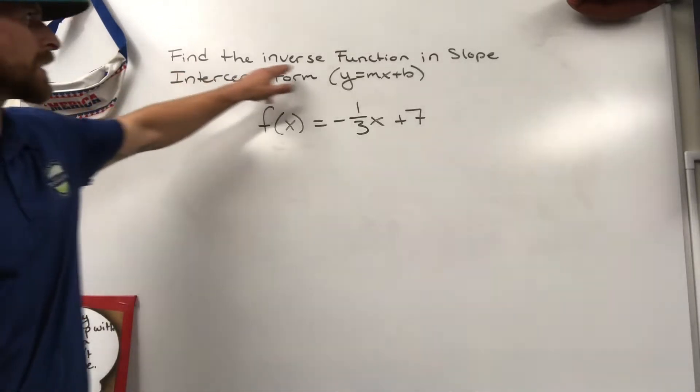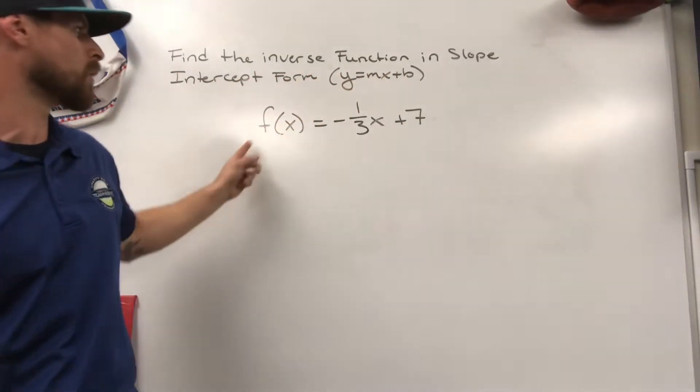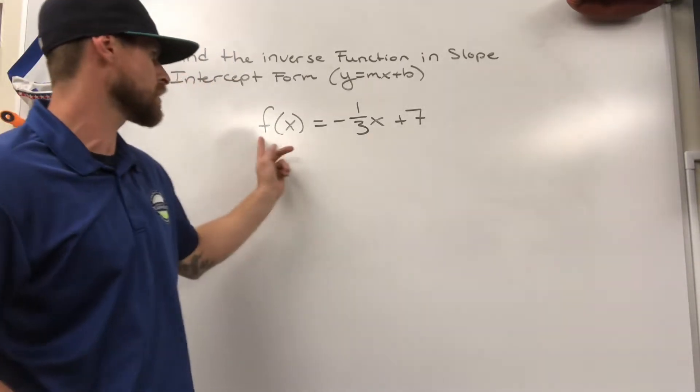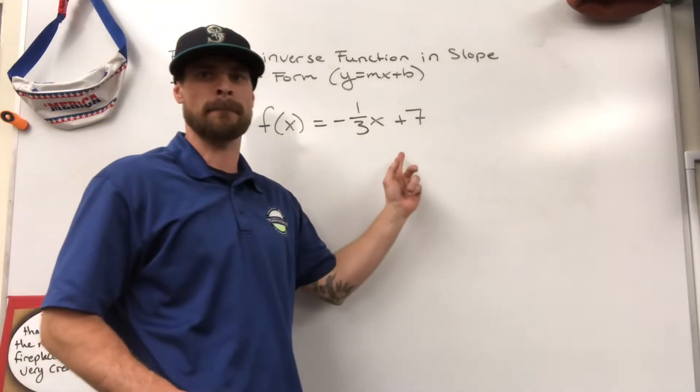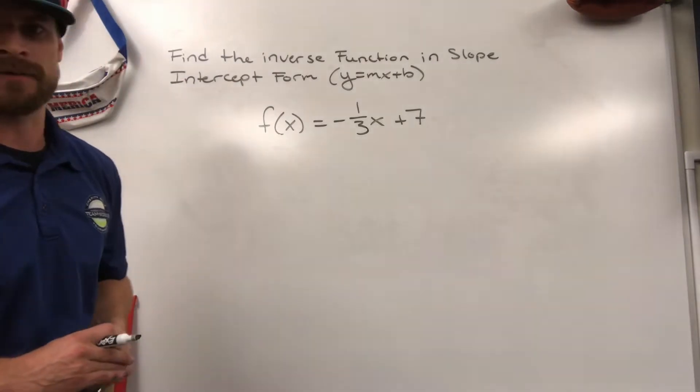All right, in this video, I'm going to teach you how to find the inverse function in slope intercept form. Right here, we have our original function, f of x equals negative one-third x plus seven, and I need the inverse of it.